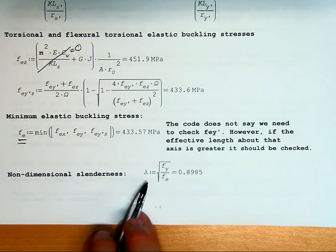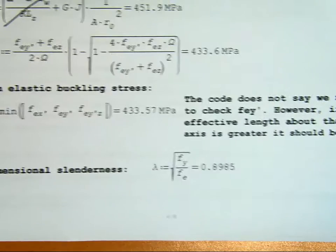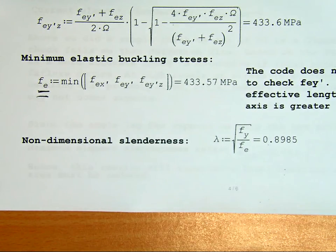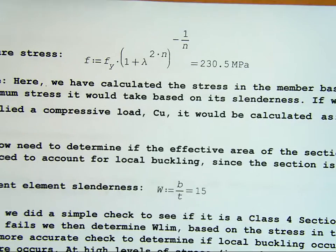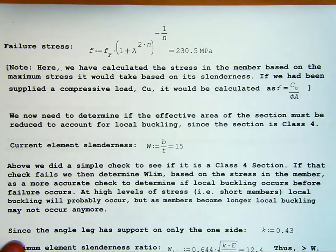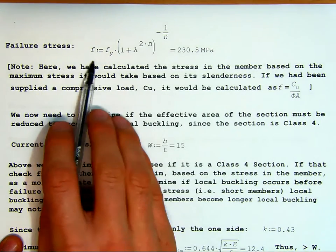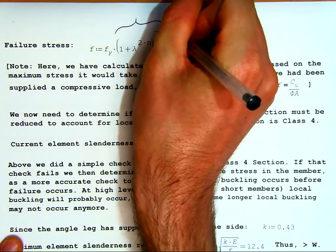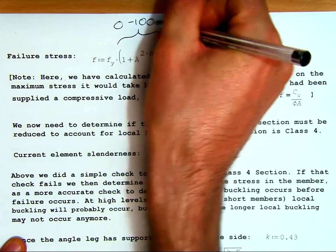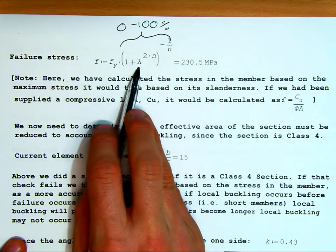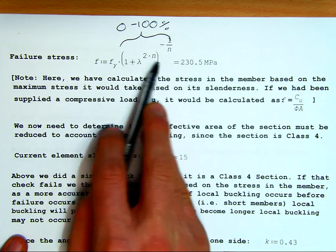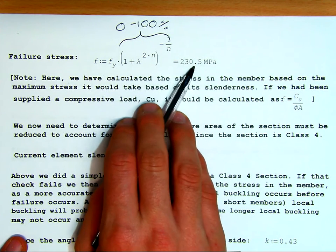Once we have an elastic buckling stress, we need our non-dimensional slenderness. So that is the value of the yield stress relative to our elastic stress, square rooted. So that's our λ, 0.8985. This is an empirical equation to get our failure stress. So our failure stress f is fy, so our yield stress times some buckling constant. This whole term is always somewhere between 0 and 100%. We plug our value for λ in, and we find that from an original 350, our failure stress is now actually at about 230 MPa.